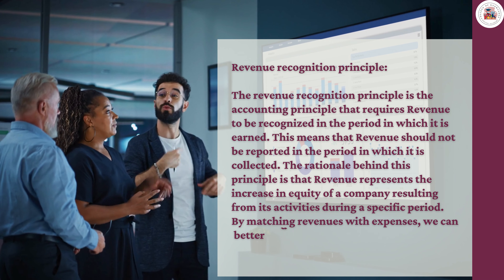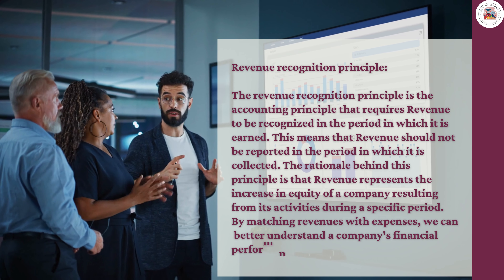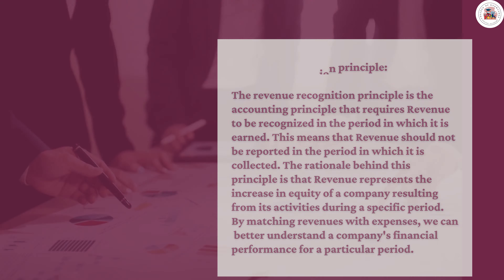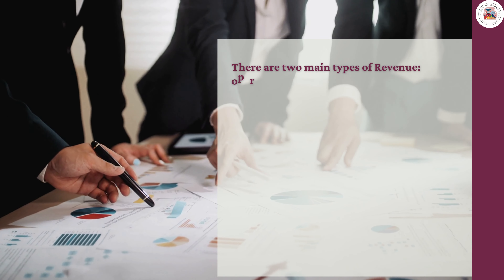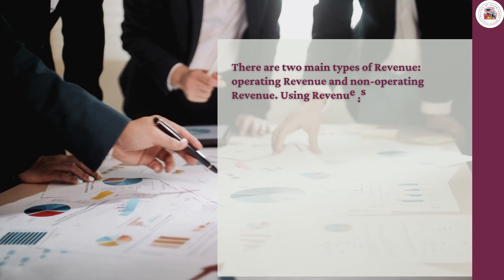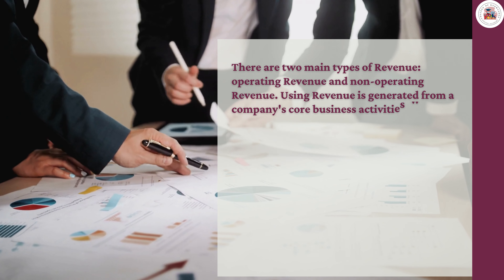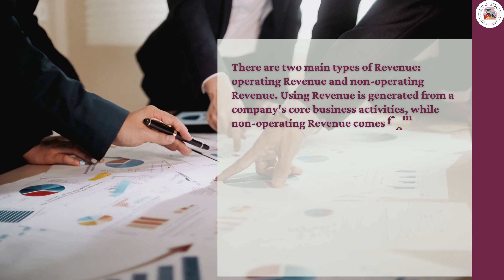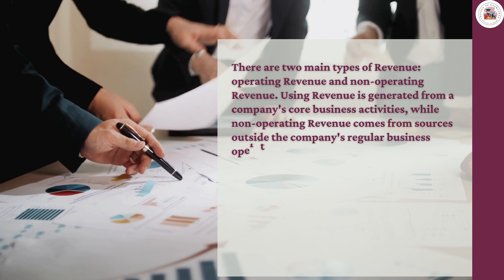By matching revenues with expenses, we can better understand a company's financial performance for a particular period. There are two main types of revenue: operating revenue and non-operating revenue. Operating revenue is generated from a company's core business activities, while non-operating revenue comes from sources outside the company's regular business operations.